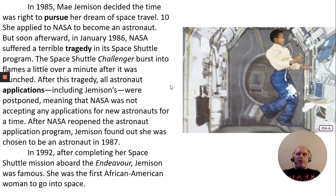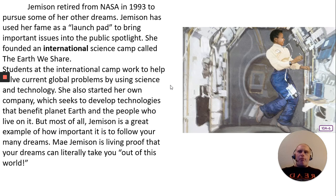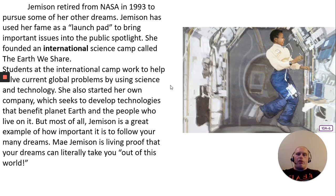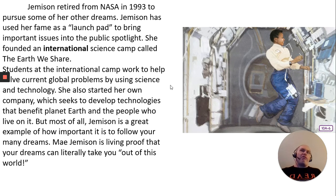In 1992, after completing her space shuttle mission aboard Endeavour, Jemison was famous — she was the first African-American woman to go into space. Jemison retired from NASA in 1993 to pursue some of her other dreams. She used her fame as a launch pad to bring important issues into public spotlight. She founded an international science camp called The Earth We Share, where students worked to help solve global problems using science and technology. She also started her own company seeking to develop technologies that benefit the planet. Mae Jemison is living proof that your dreams can literally take you out of this world.